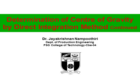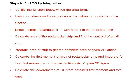The procedure is similar to what we discussed in the last session. Let us look at the steps involved in center of gravity determination by direct integration method. The first step is identifying the functions and calculating the boundary conditions. Next, select a small rectangular strip touching the functional line, then determine the center of gravity and area of the small strip. Integrate the area of the small strip to get the total area of the lamina. Calculate the first moment of area of the small strip and integrate for the total first moment of area with respect to the axis. Finally, calculate the coordinates of the center of gravity from the first moment of area and total area of the plane lamina.